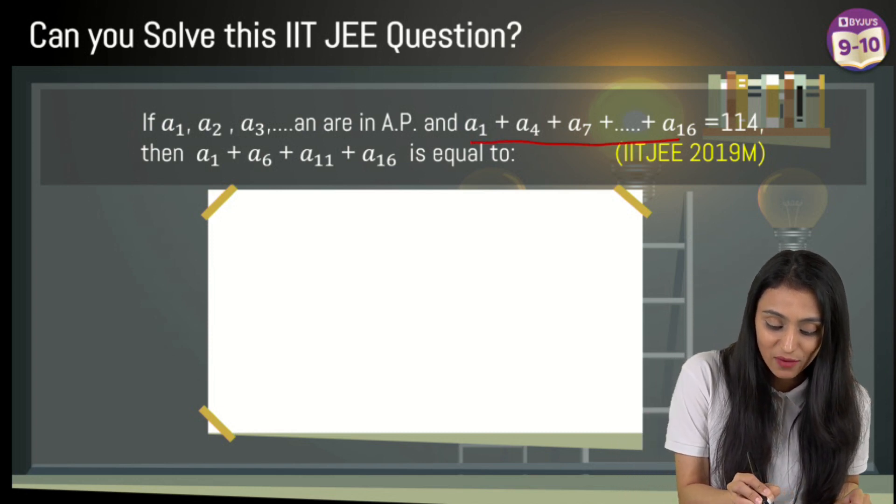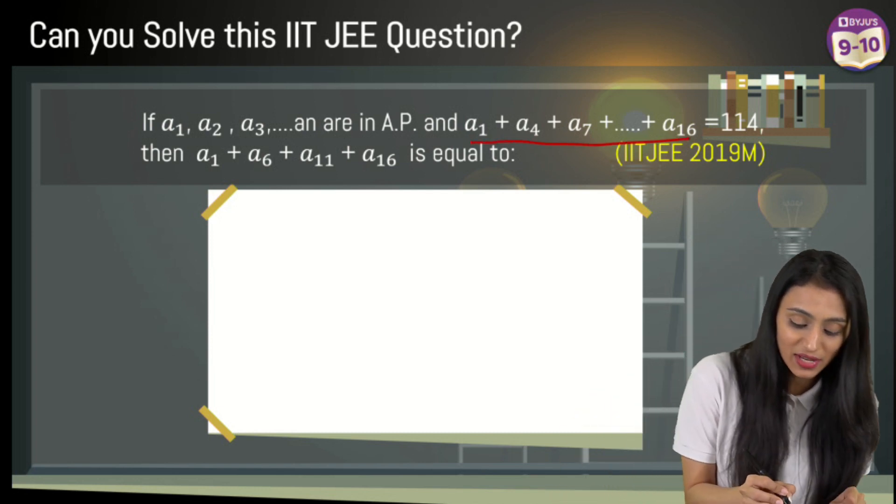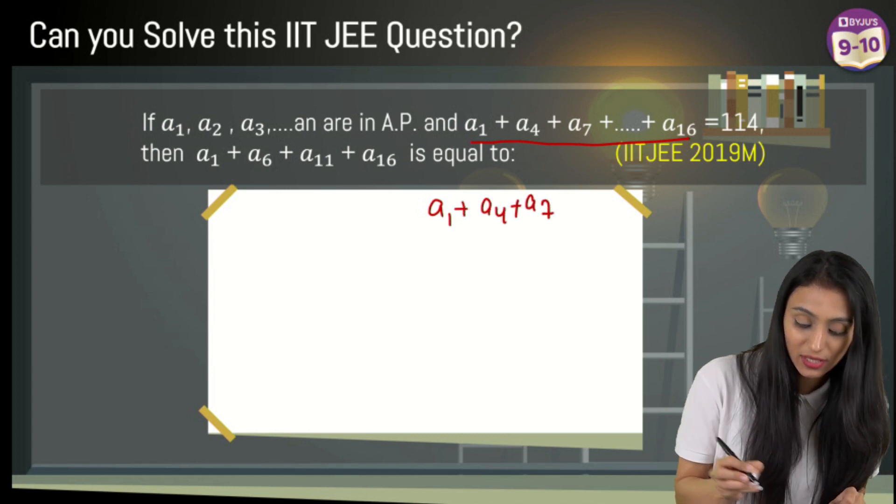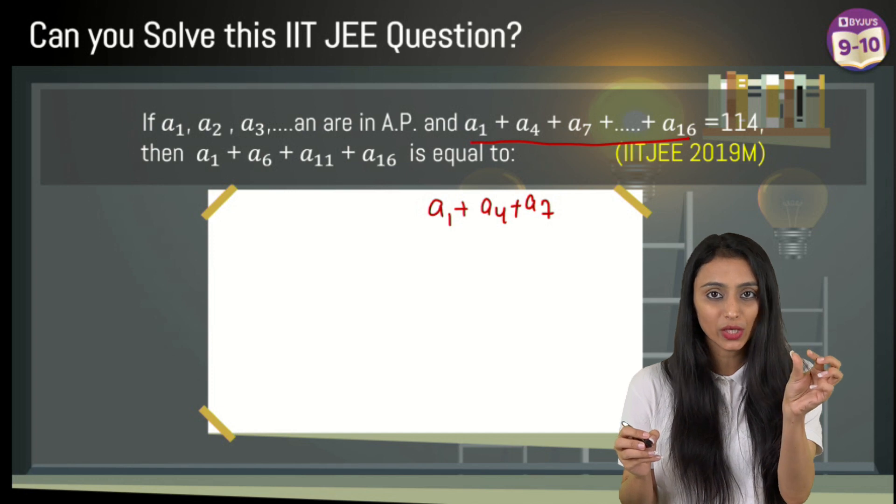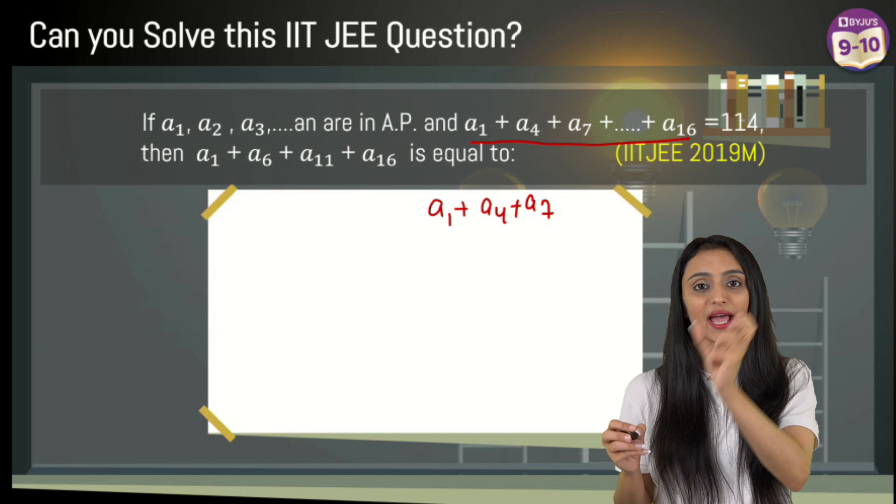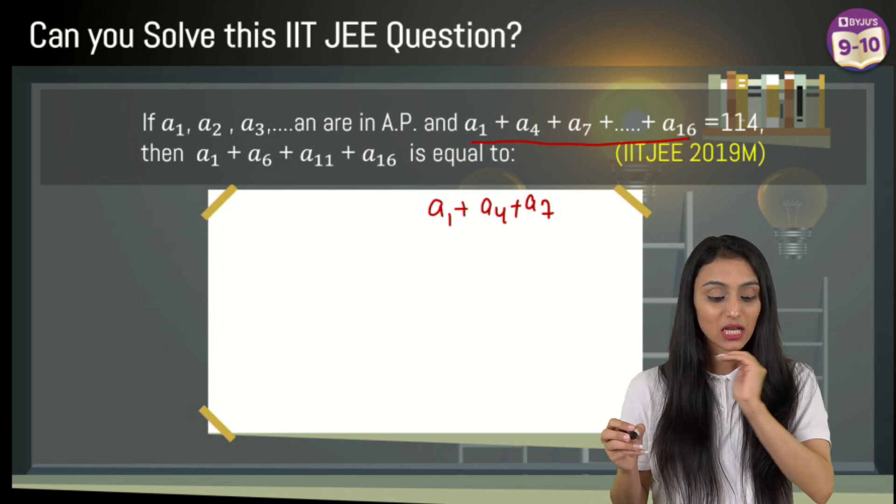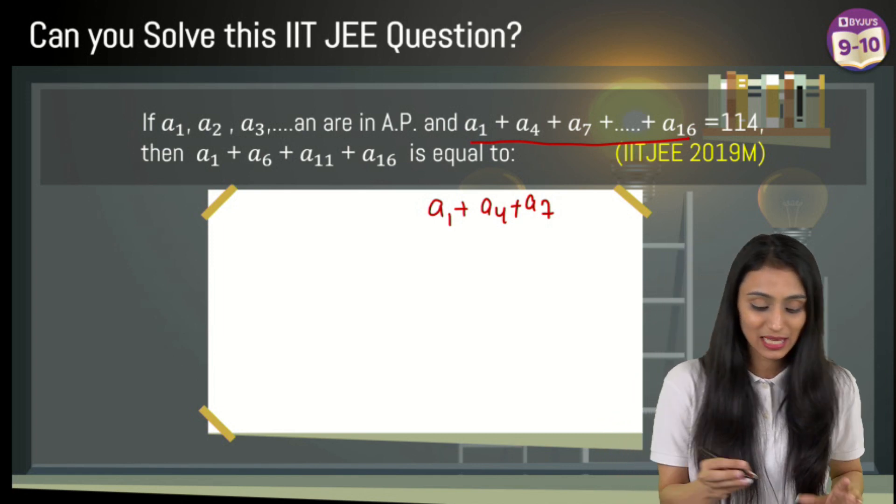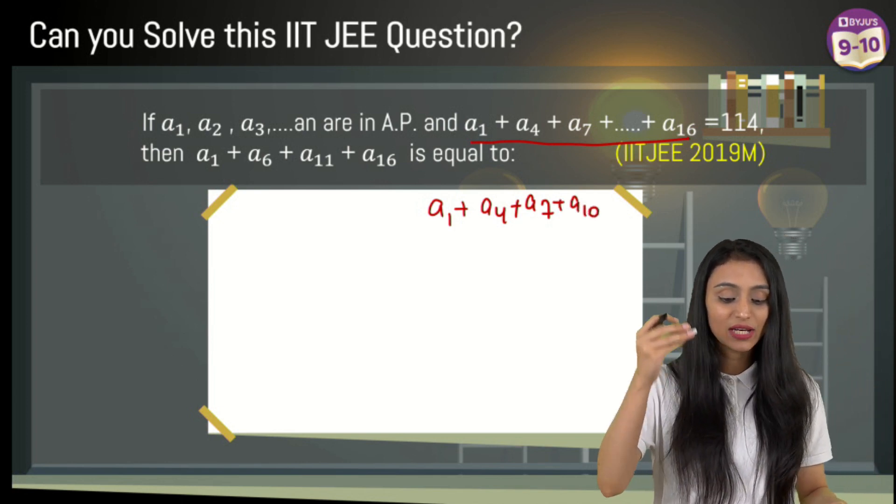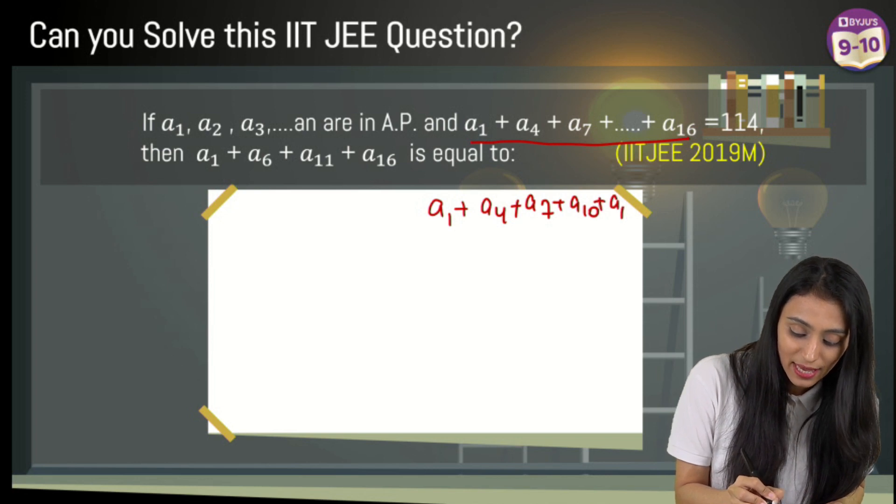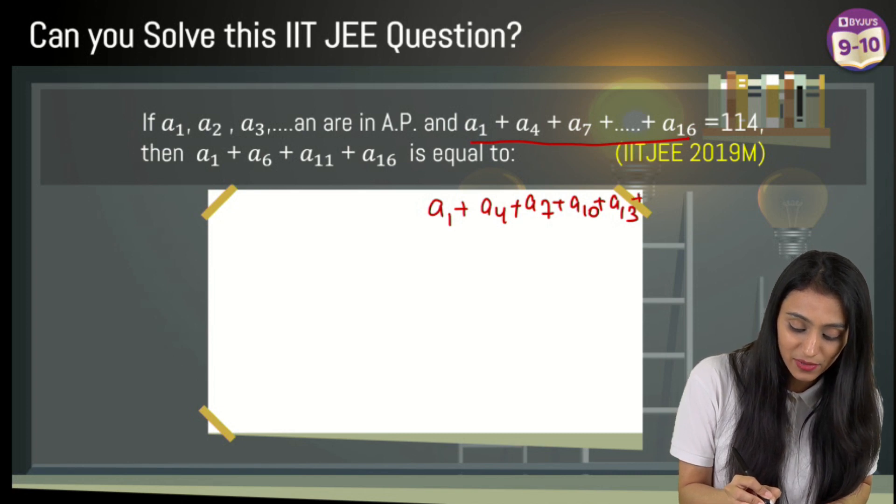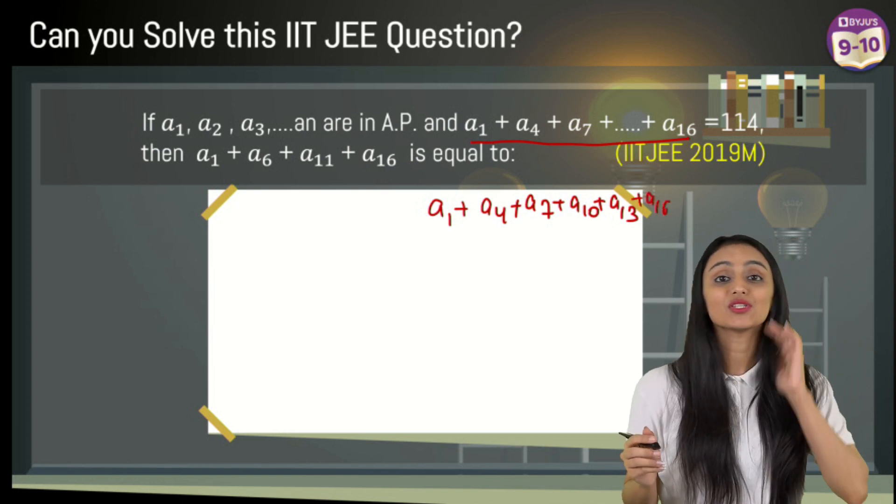First of all, we know this is an AP. Out of these, only certain terms appear: a₁, a₄, a₇, a₁₆. After a₁ we have a₄, so a₂ and a₃ are missing - two terms are missing. After a₄ I have a₇, so a₅ and a₆ are missing. After a₇, a₈ and a₉ will be missing, so the next term is a₁₀. Similarly we get a₁₃, and then a₁₆. Their sum is 114.